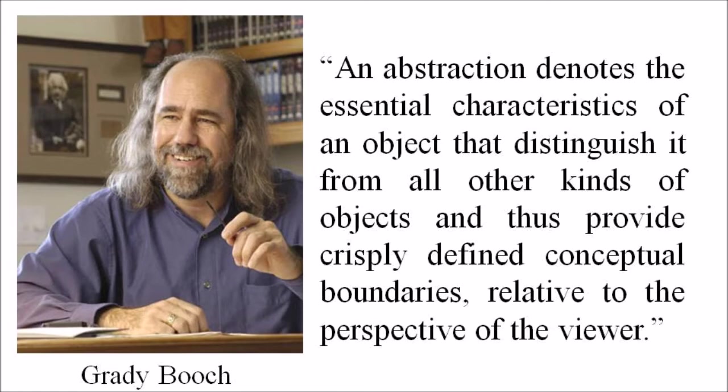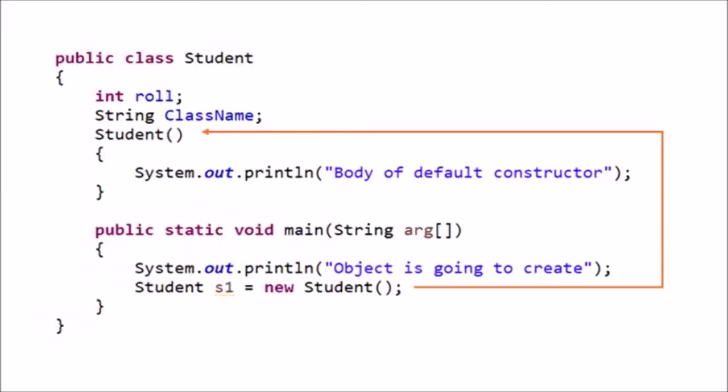For example, when a class student is designed, the attributes like enrollment number, name, course, and address are included, while characteristics like pulse rate, size of the shoe, height, weight, etc. are eliminated since they are irrelevant from the perspective of the educational institution.